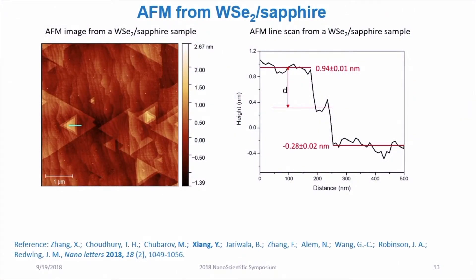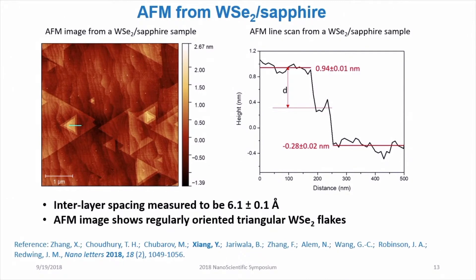First, if we do a line scan across one of the flakes, we can get the step height or interlayer spacing, which is about 6.1 Ångström. Second, almost all the flakes on the surface seem to have the same orientation, either pointing to the left or to the right.